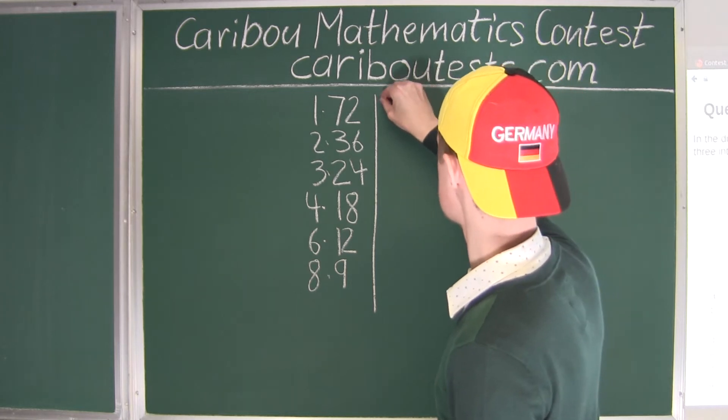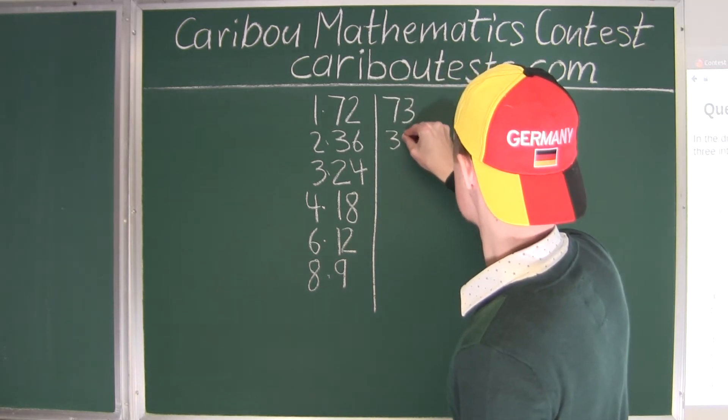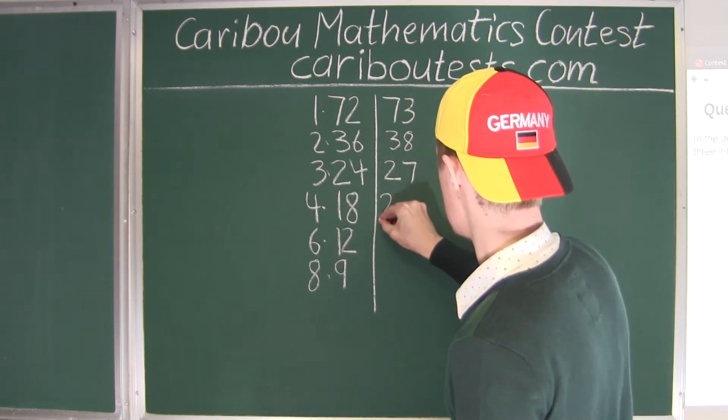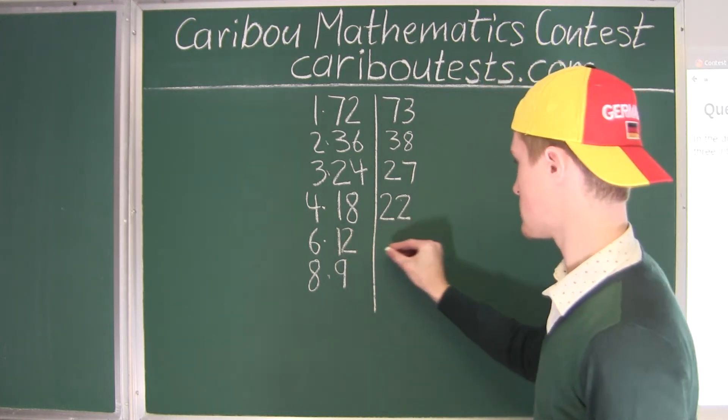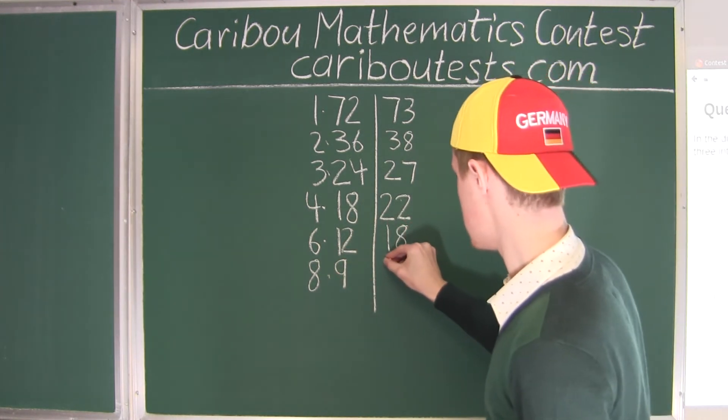So 1 and 72, that's 73. Then 2 and 36 is 38, then 3 and 24 is 27, and then 4 and 18 is 22, 6 and 12 is 18, and finally 8 and 9 is 17.